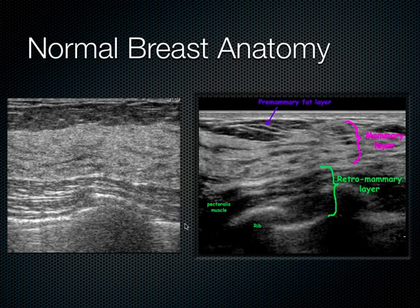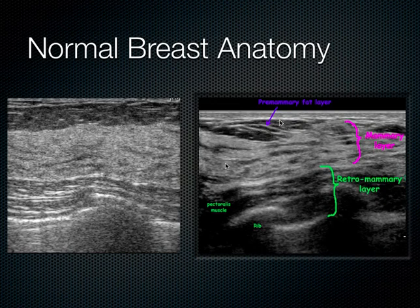Behind the glandular layer is what we call the retromammary layer, which is basically the pectoralis muscle. There's also a rib here with a shadow coming down — familiar from lung ultrasound. So if this is the rib, the white line next to it is the pleural line. You'd see this pleural line sliding back and forth as the patient breathes in and out. In summary: subcutaneous fat, then the glandular mammary layer, and then the retromammary layer consisting of pectoralis muscle, rib, and pleural line.